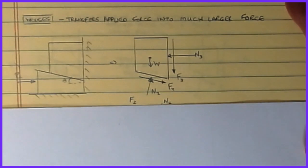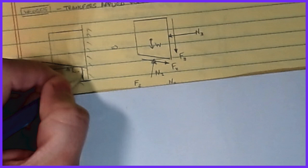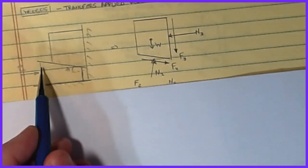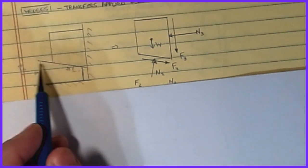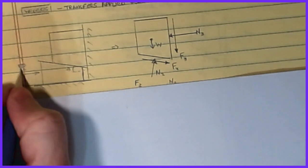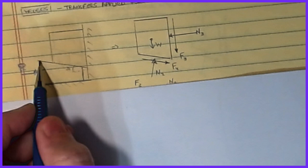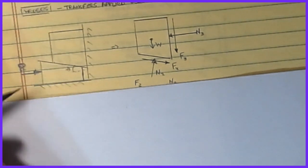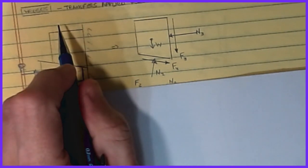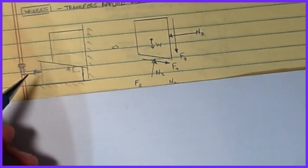We have a wedge — this could be something like a doorstop — with a force P being applied to the end of it. Because of the behavior of this inclined ramp, as the block moves inward it exerts a force onto the block above, causing it to go upwards. That's the redirection we're talking about.